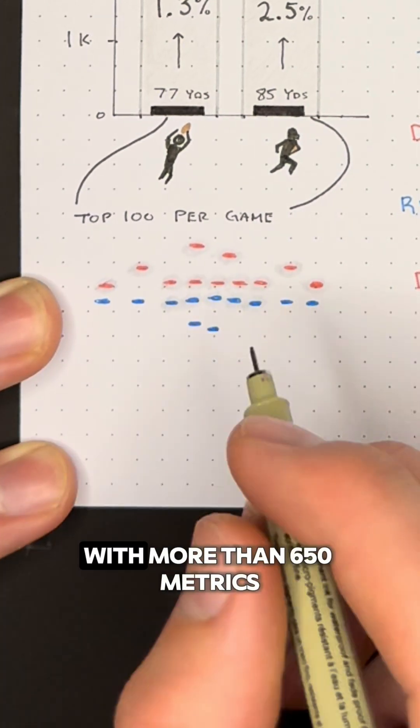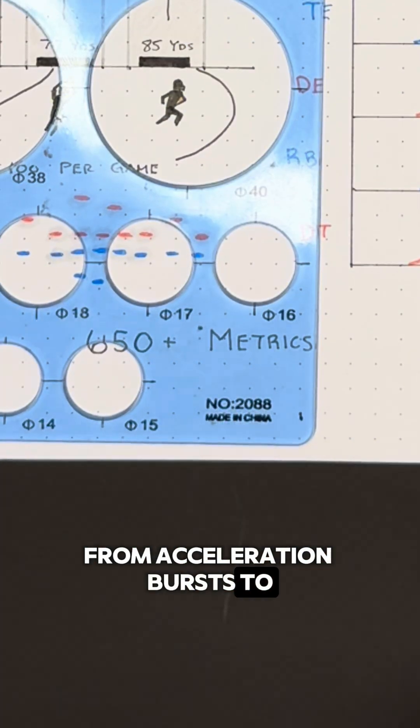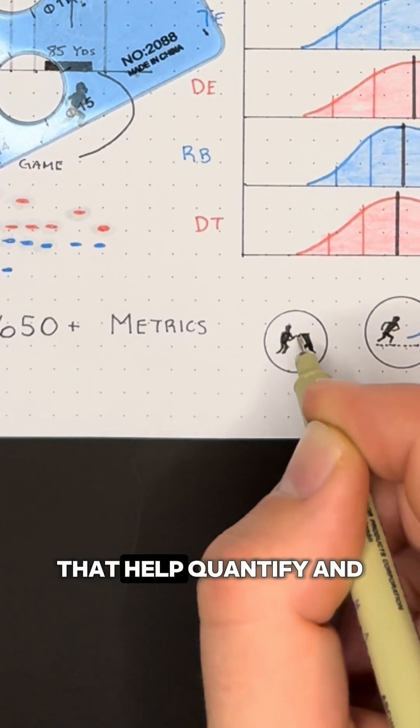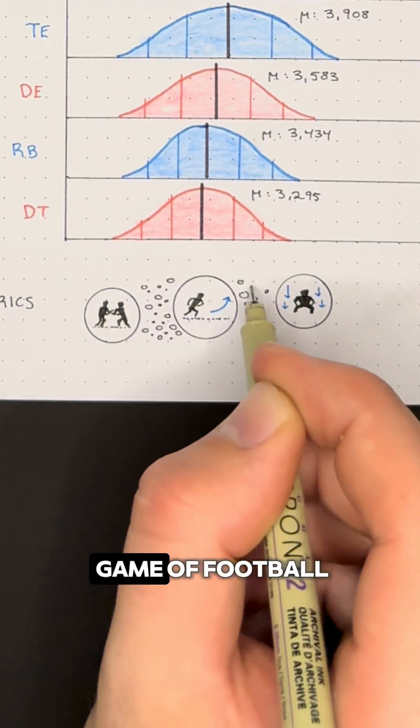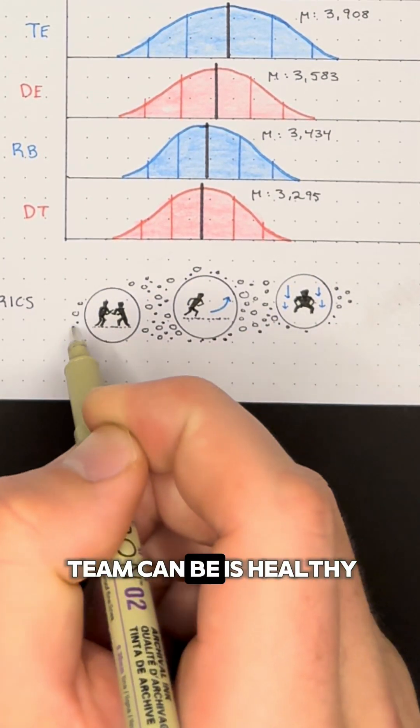And that's where Catapult comes in with more than 650 metrics from acceleration bursts to contact intensity to player load that help quantify and tailor practice to the demand of every position on the field. To win in the game of football, the best thing a team can be is healthy.